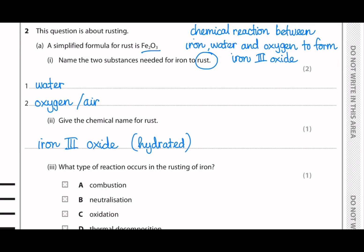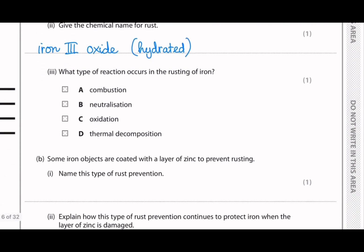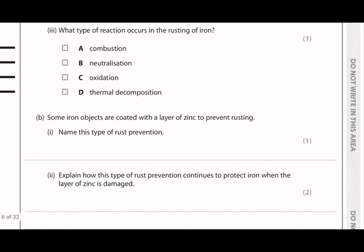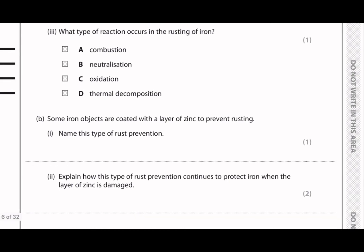Next question asks, what type of reaction occurs in the rusting of iron? So we can see that in the definition, it goes from iron to iron 3 oxide. That means the oxidation state goes from 0 to 3 plus. So that means the type of reaction when the oxidation state of an element is changing is the oxidation reaction. So here, answer C is correct.